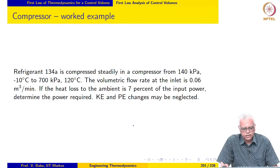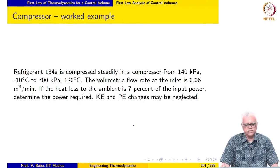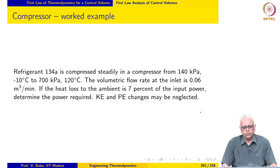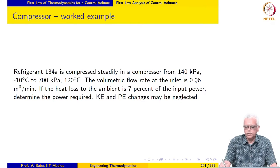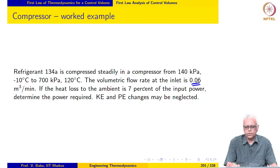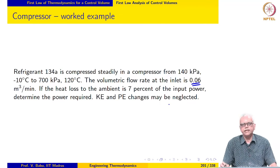The next example involves refrigerant R134A. Refrigerant is compressed steadily in a compressor from 140 kPa and minus 10 degrees Celsius to 700 kPa and 120 degrees Celsius. The volumetric flow rate at the inlet is 0.06 cubic meters per minute. The heat loss to the ambient is 7 percent of the input power. Determine the power required; KE and PE changes may be neglected.